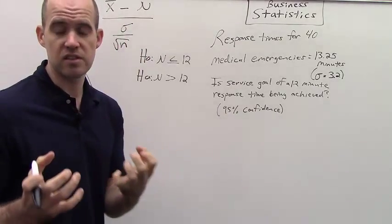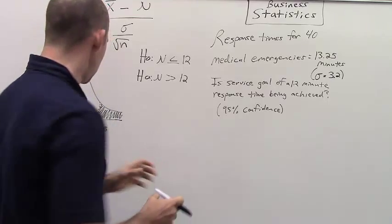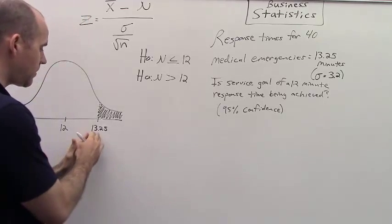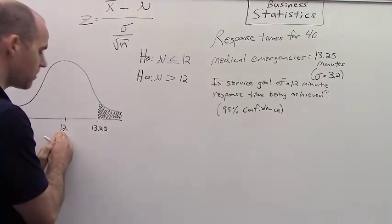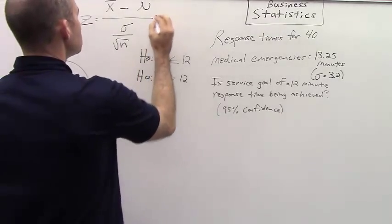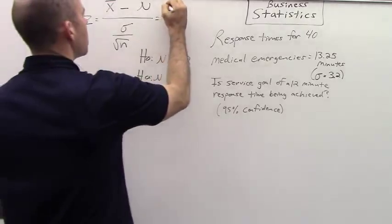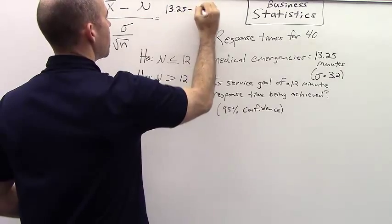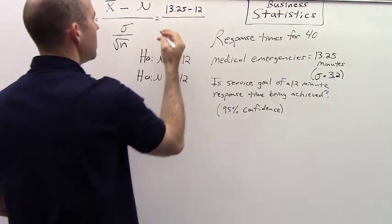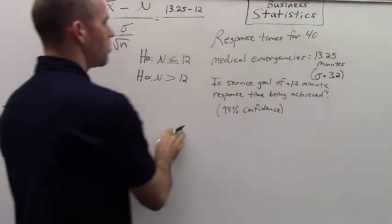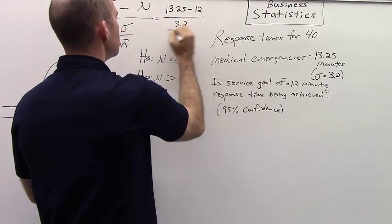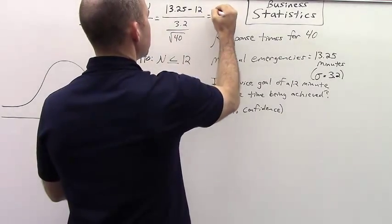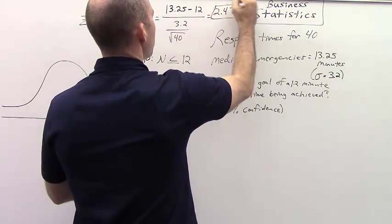So we want to collect a z-score to figure out what these values are in the standard normal probability distribution. In other words, how many standard errors away is this value from this particular value? So in this case, we're going to take our sample mean, 13.25, and subtract out our population mean, 12, and then we're going to divide by our standard error, which is going to be 3.2 divided by the square root of 40. Now, if you were to do the math on this, you would get a value of 2.47.